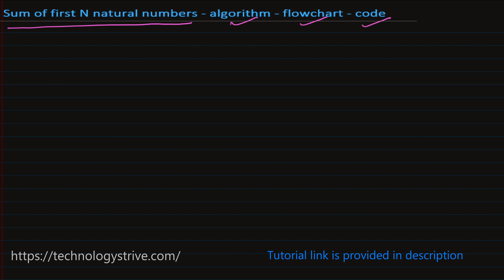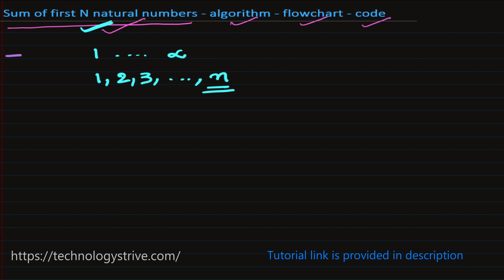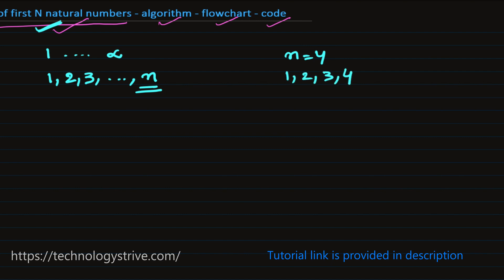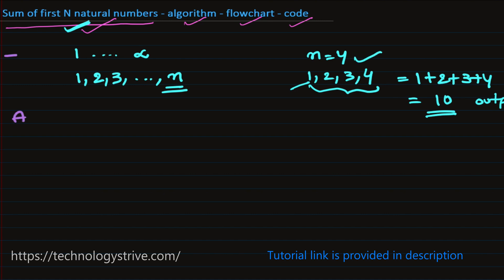First we need to be clear about the input and expected output. Natural numbers always start with 1 and go up to infinity. So first N natural numbers means 1, 2, 3, up to N. For example, if N equals 4, the first 4 natural numbers are 1, 2, 3, 4, and their sum is 1+2+3+4 = 10. That is the expected output.